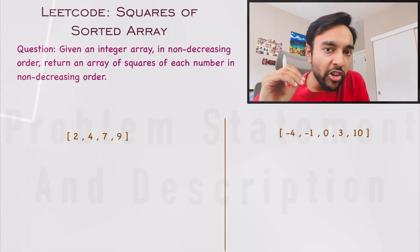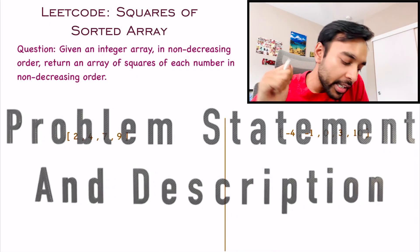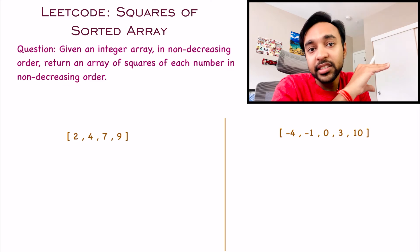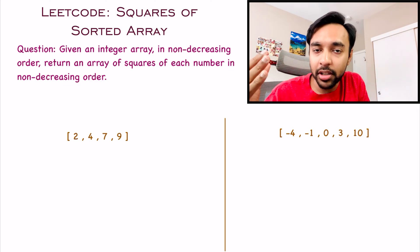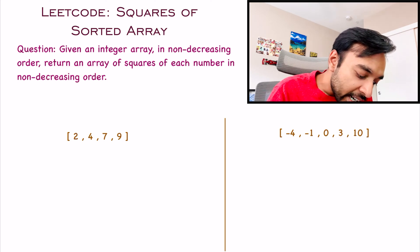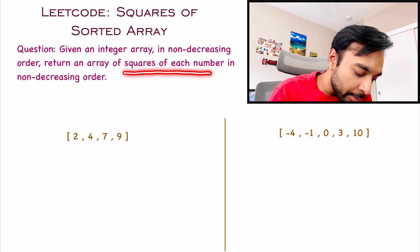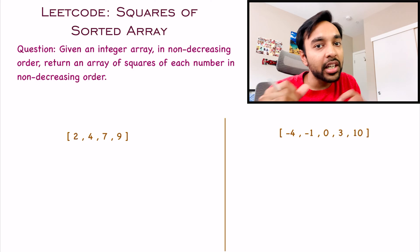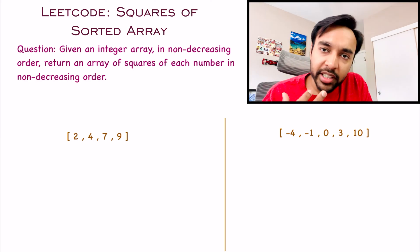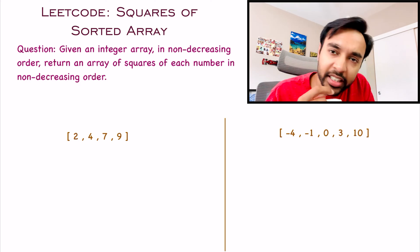Let us quickly try to make sure that we are understanding the problem statement correctly. In this problem, you are given an integer array that is in a non-decreasing order. That means the elements are arranged in an ascending order. Now, you need to return me an array that has the squares of each number, and that is also in an ascending order. This looks pretty straightforward, right? Let us look at the sample test cases now.